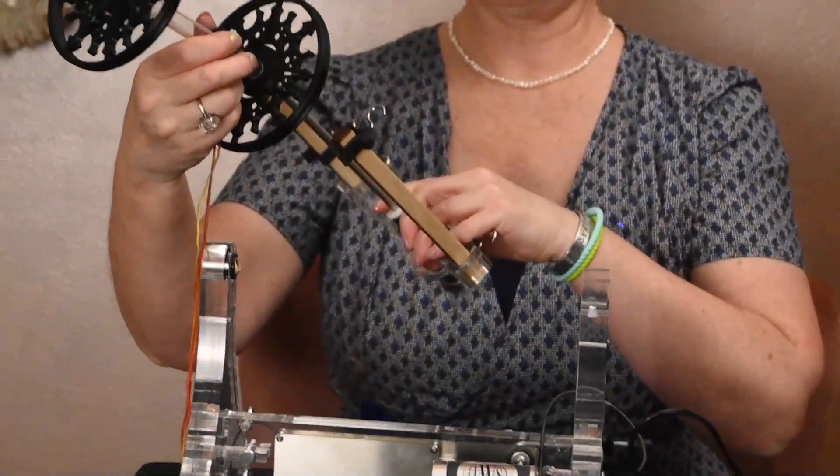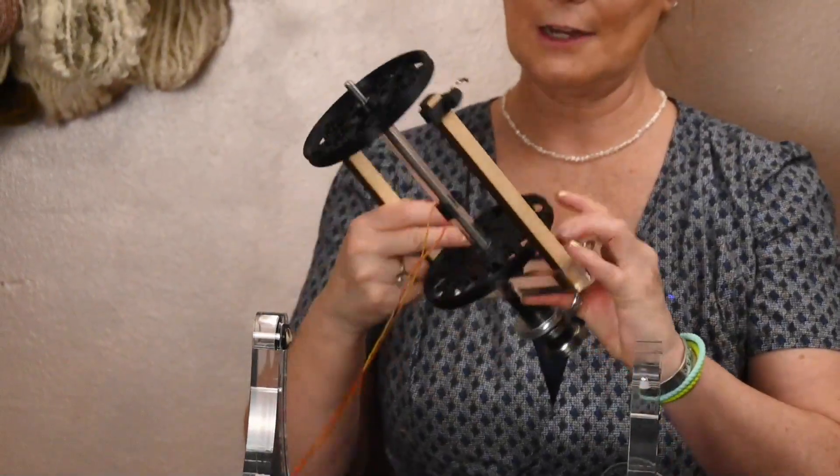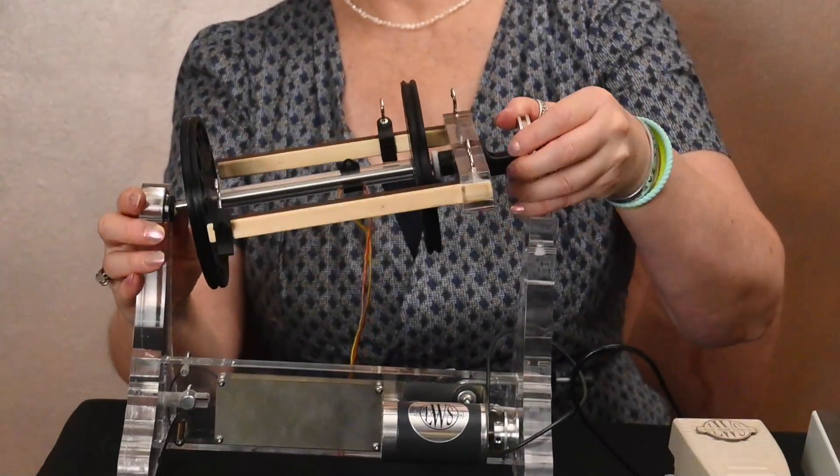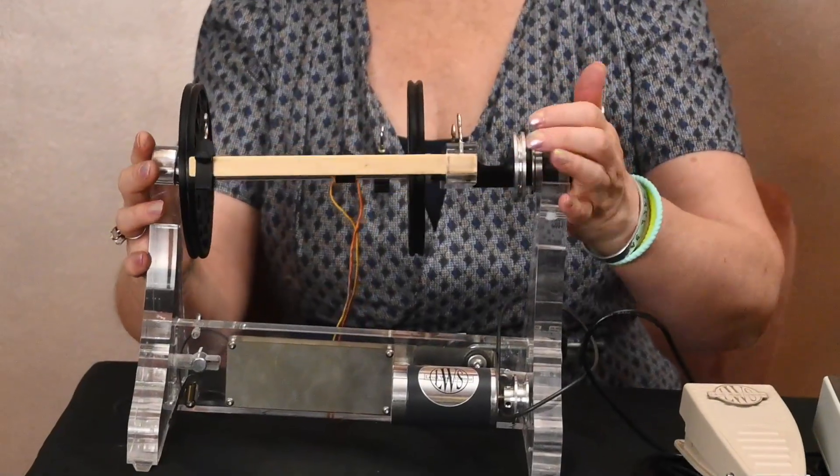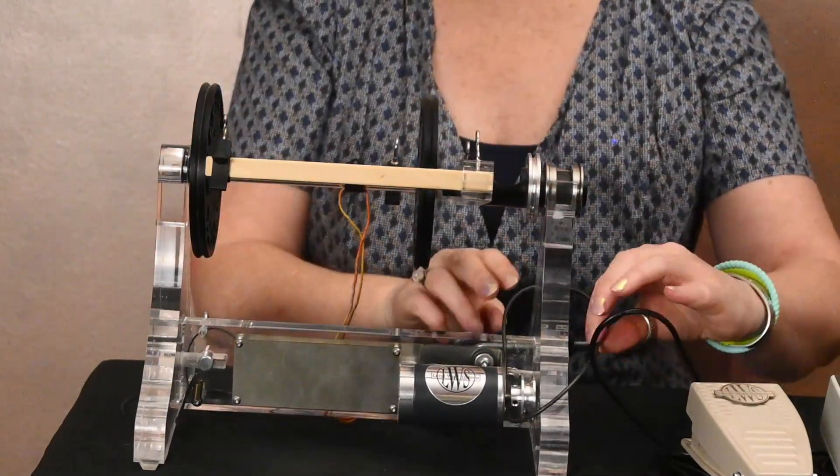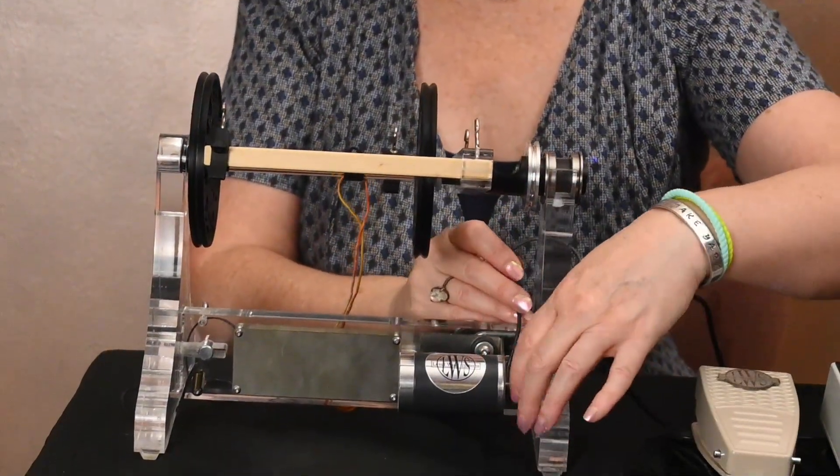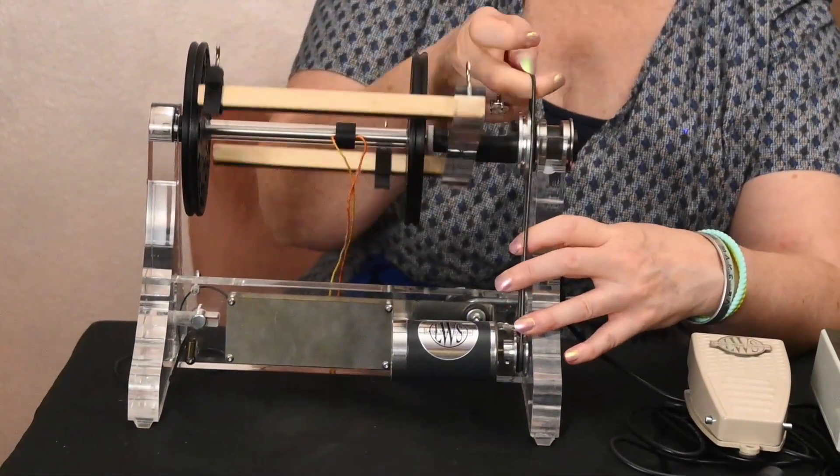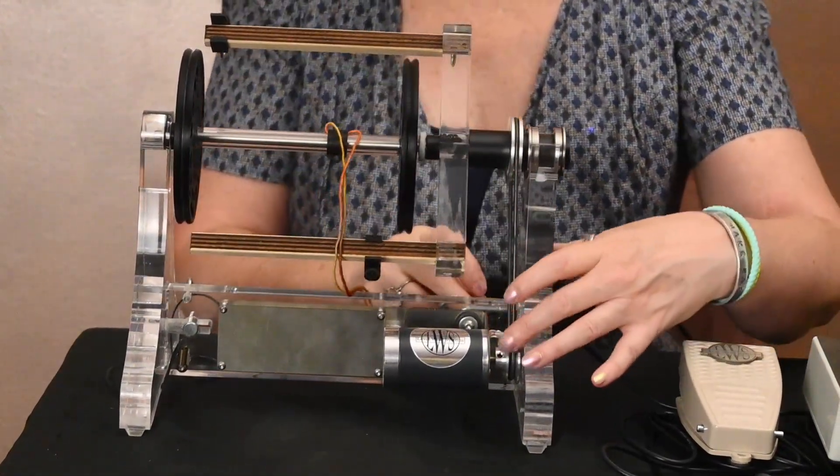Slip the bobbin onto the flyer. Then I'm going to set it into the back hole and set it into the front. Make sure that the drive band is around both grooves like so.